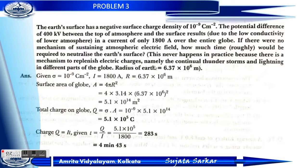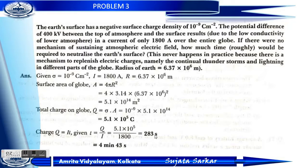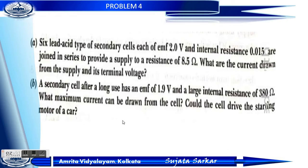To find the time required to neutralize the earth's surface: T equals Q by I, since Q equals I T. Q equals 5.1 into 10 to the power 5 and I equals 1800 ampere. So T is approximately 283 seconds, or 4 minutes 43 seconds.